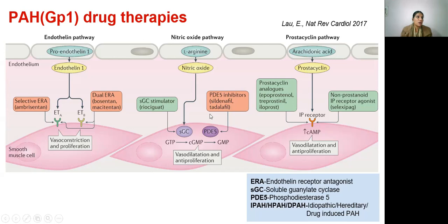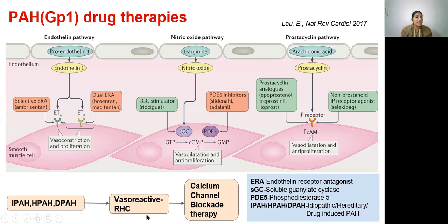It is very important to remember that drugs in the same pathway cannot be combined — for example, riociguat cannot be combined with phosphodiesterase 5 inhibitors. Calcium channel blocker therapy is indicated in patients with idiopathic, hereditary, and drug-induced PAH only if vasoreactivity is demonstrated on right heart catheterization.